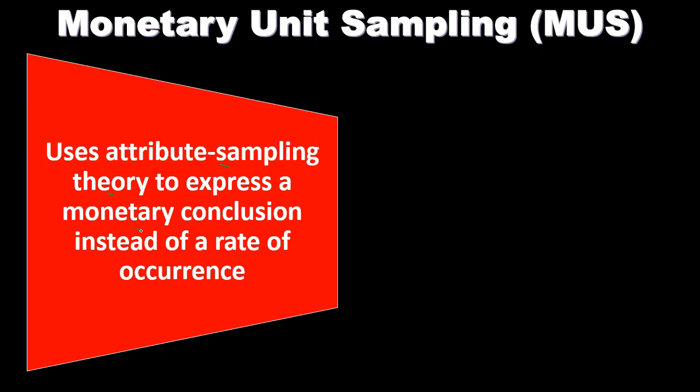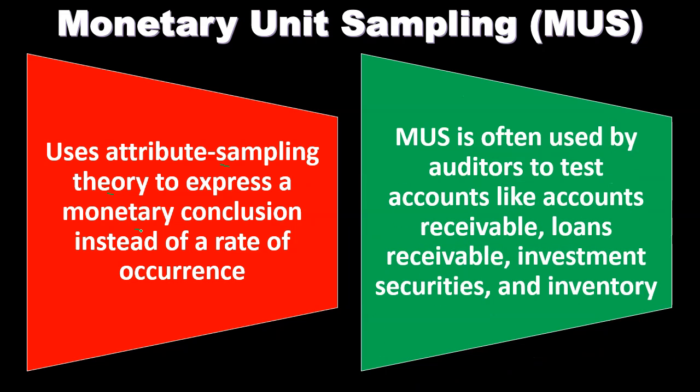We would think about what types of tests we would want this type of conclusion — a monetary conclusion as opposed to a rate of occurrence. Monetary unit sampling is often used by auditors to test accounts like accounts receivable, loans receivable, investment securities, and inventory.